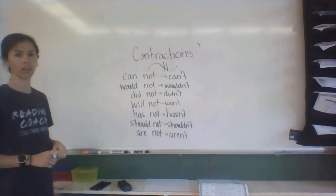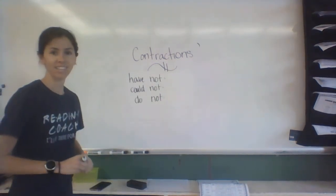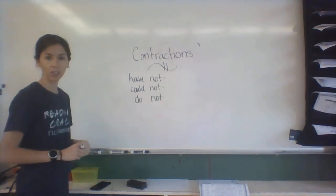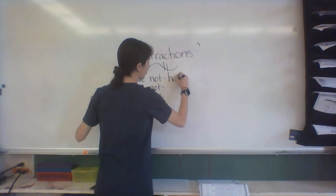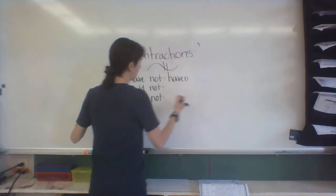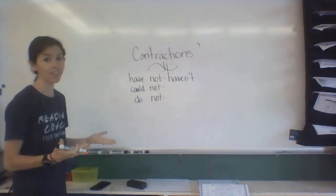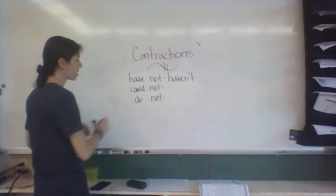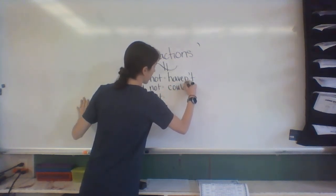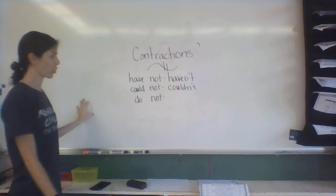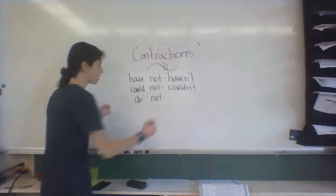So I'm gonna go ahead and leave that up. I want to go ahead and do these last three that'll be in your packet. 'Have not' is gonna turn to—I'm gonna get rid of that O and turn it to an apostrophe—'haven't.' 'I haven't gone to the store today.' 'Could not'—'I couldn't make it to the store today.' And 'do not'—you got it—turns to 'don't.'